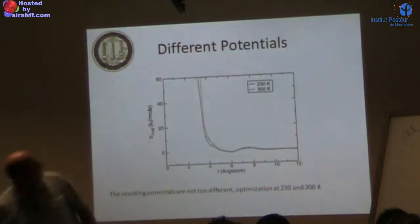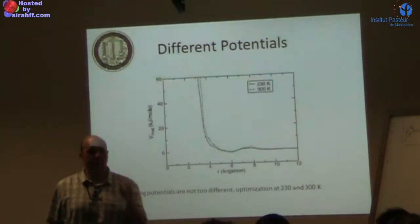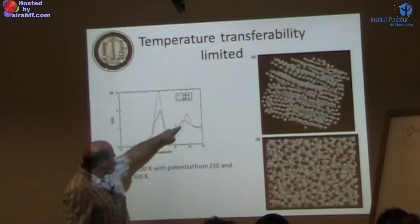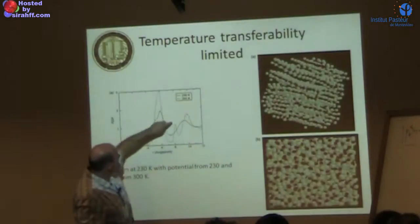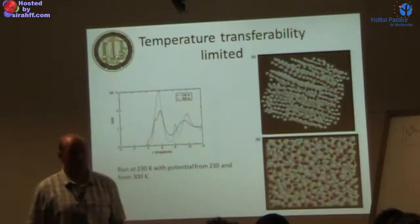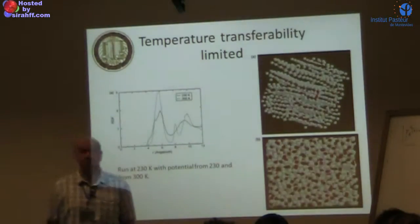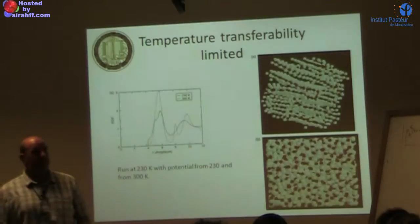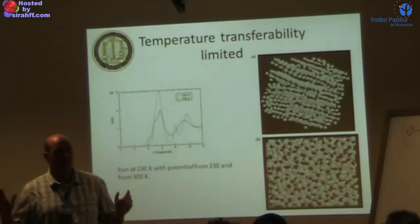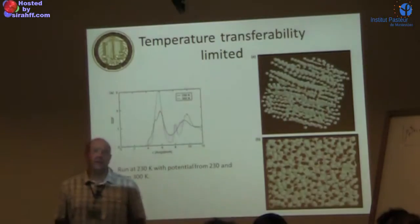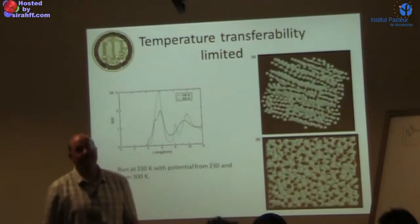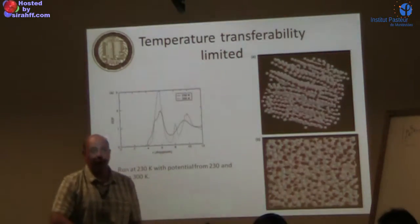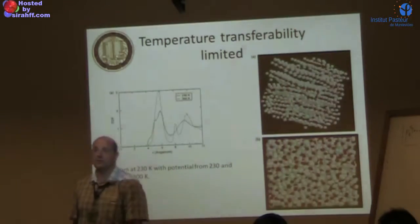When we take these two potentials — the 230 K and the 300 K ones — and run both at 230 K, the 230-optimized potential works correctly, while the 300 K potential gives complete overestimation and the system crystallizes. The potential optimized at 300 K is not transferable down 70 K to 230 K. We did this systematically and found it works almost exactly down to the glass transition temperature — we can go down to about 260 K and get good agreement, but as soon as you go below TG, the system crystallizes.